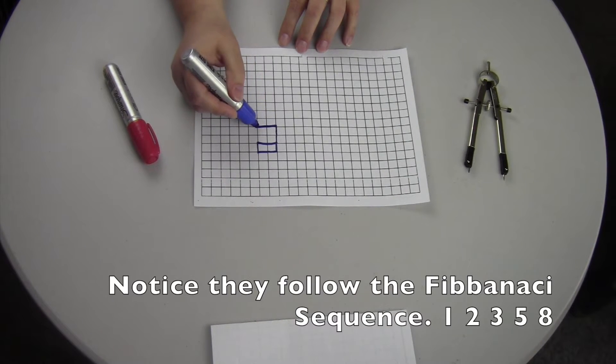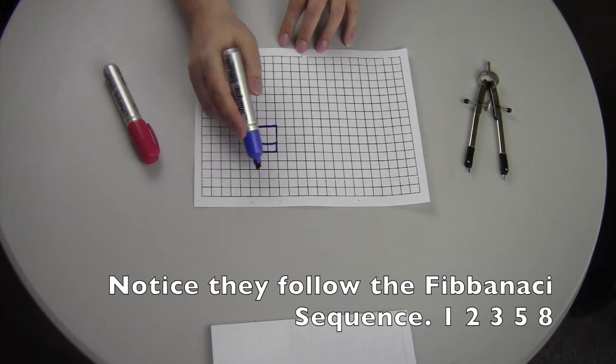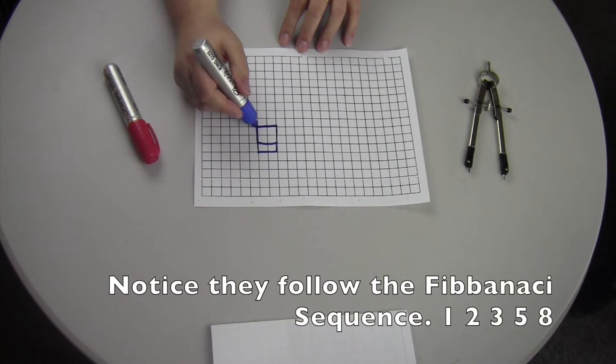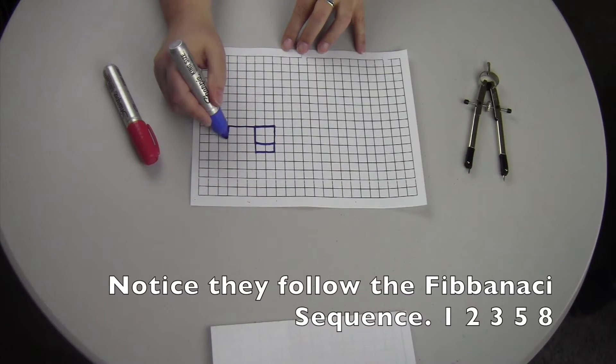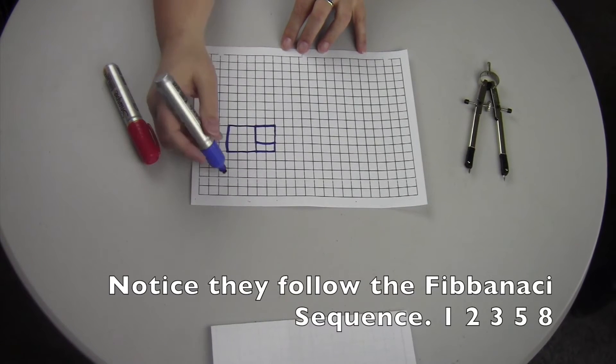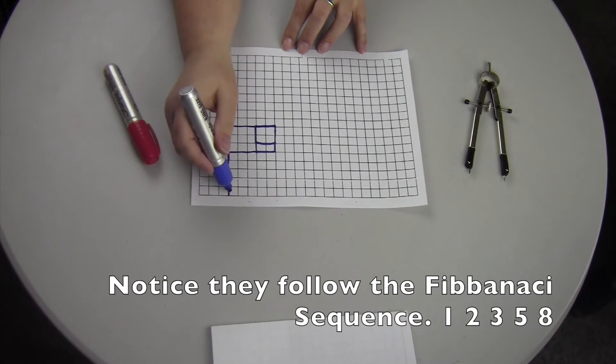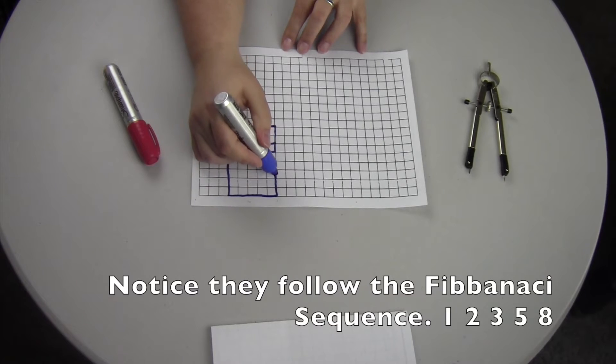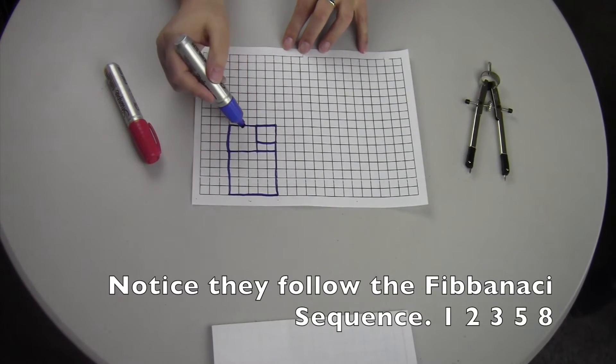So we're going to draw a 2x2 here, and then we're going to go in a spiraling direction. We're going to go a 3x3 on top, and then a 5x5. So see how it's squaring?